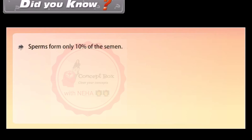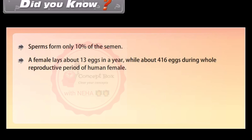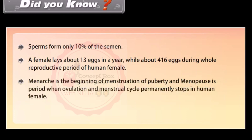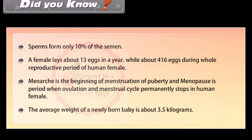Did you know: sperms form only 10 percent of semen. A female produces about 13 eggs in a year, or about 416 eggs during her whole reproductive period. Menarche is the beginning of menstruation at puberty, and menopause is the period when ovulation and the menstrual cycle permanently stop. The average weight of a newly born baby is about 3.5 kilograms.